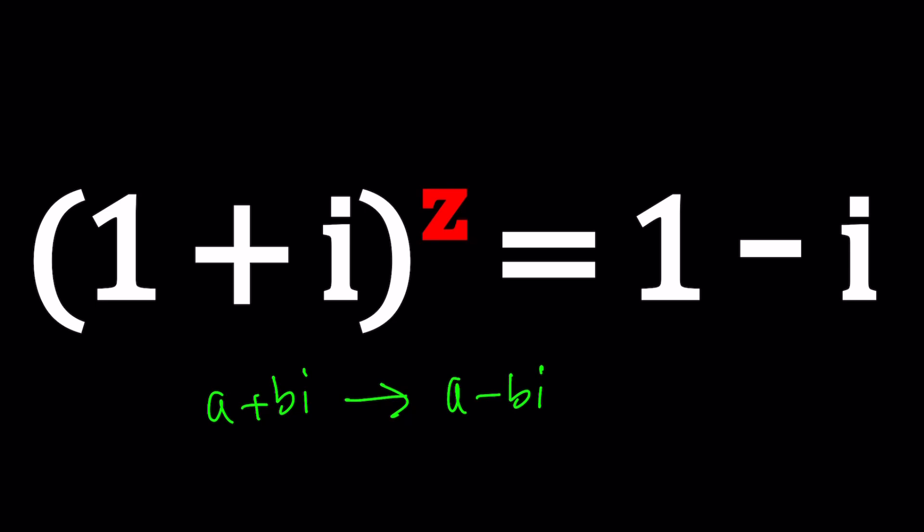In other words, we have an exponent that conjugates. How nice is that, right? So, let's go ahead and find out what Z is. What kind of power can turn 1 plus I into 1 minus I? Isn't that an interesting transformation? I think it is.